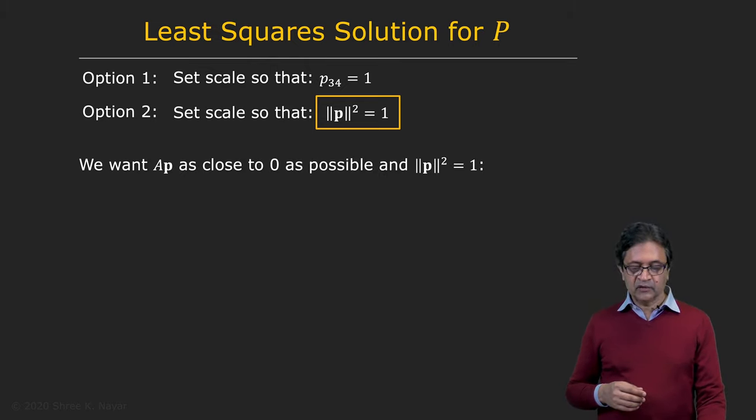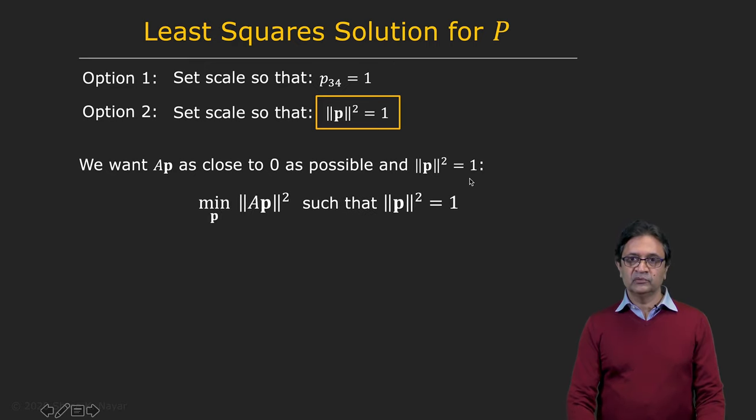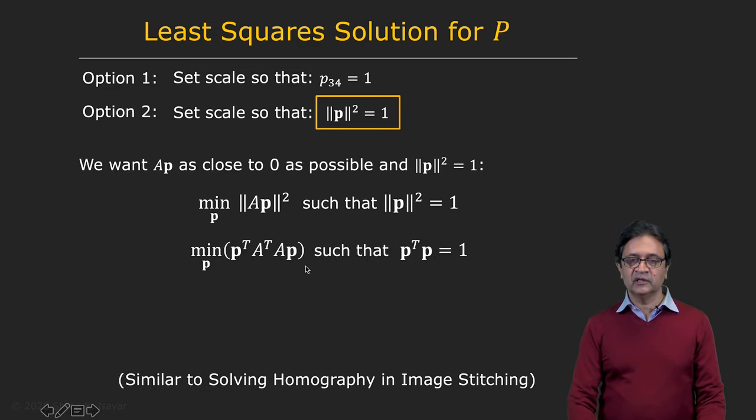So what do we have now? We want A*P equal to zero and P squared equal to one. And so we can say that we want to find the P, the vector P that minimizes A*P squared such that P squared is equal to one. And you can see here that this is exactly the problem we solved in the case of finding the homography matrix during image stitching. It's exactly the same problem. It's called the constrained least squares problem.